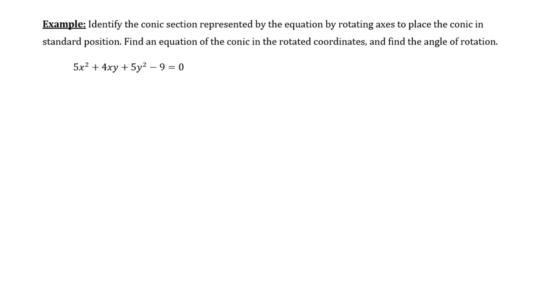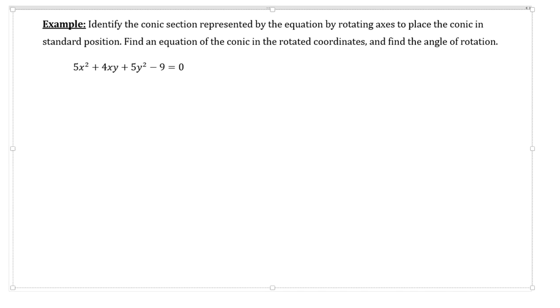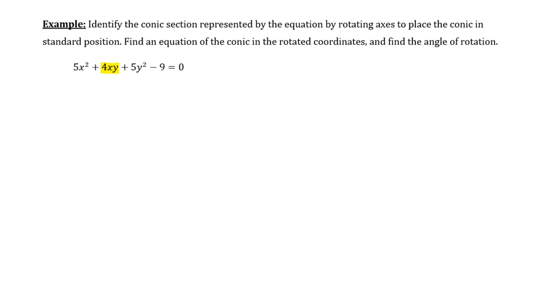Let's start with the equation. Looking at the equation here, we have 5x² + 4xy + 5y² - 9 = 0. I want to point out that there is this cross term. And what that indicates for us, based on the info in the note packet, is that this is a conic section that is rotated out of standard position. That means that its major axis, minor or transverse, what have you, is not in perfect alignment with the x and/or y axis.